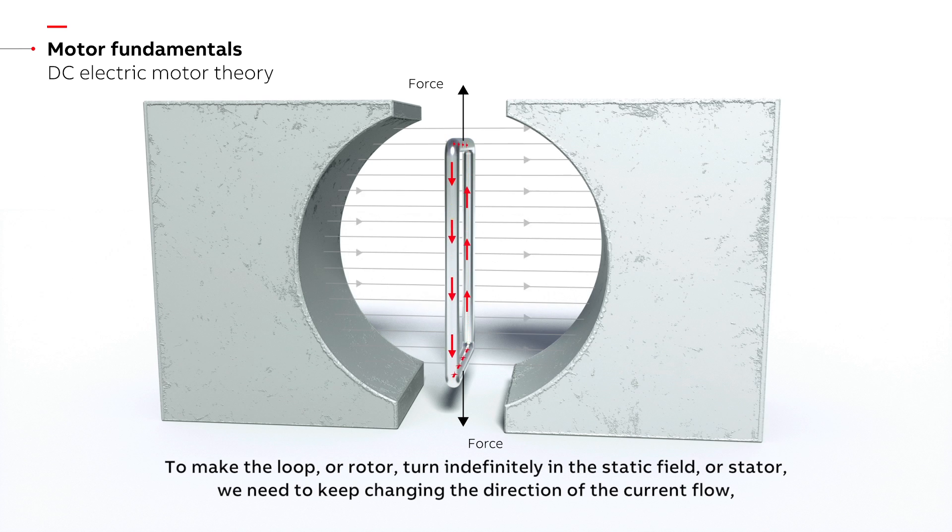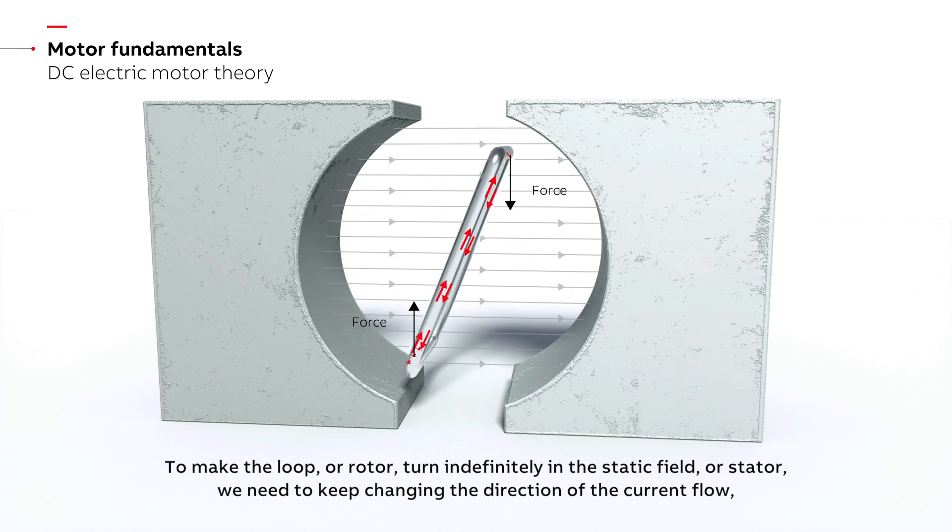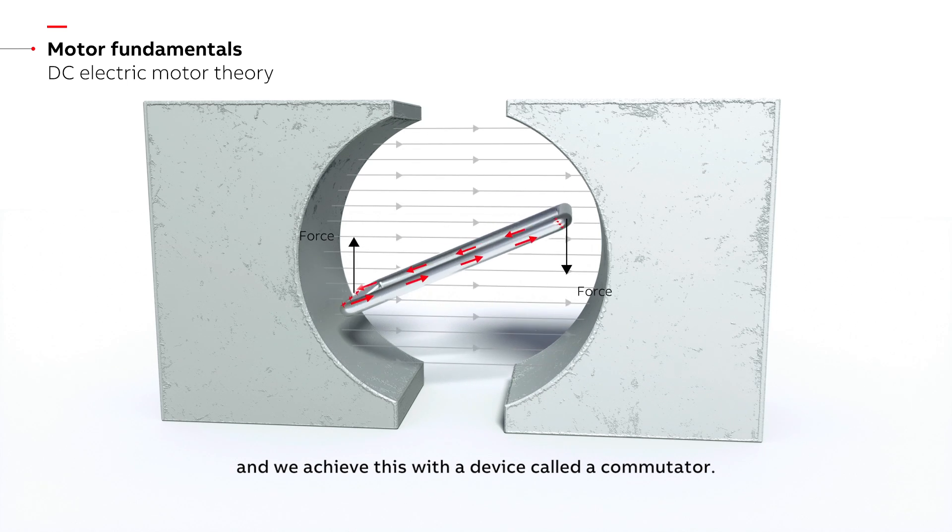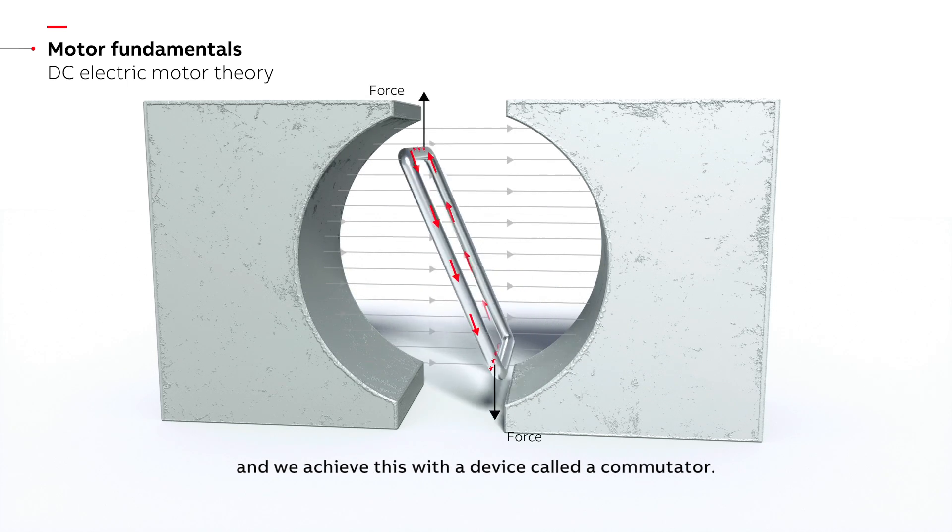To make the loop or rotor turn indefinitely in the static field or stator, we need to keep changing the direction of the current flow, and we achieve this with a device called a commutator.